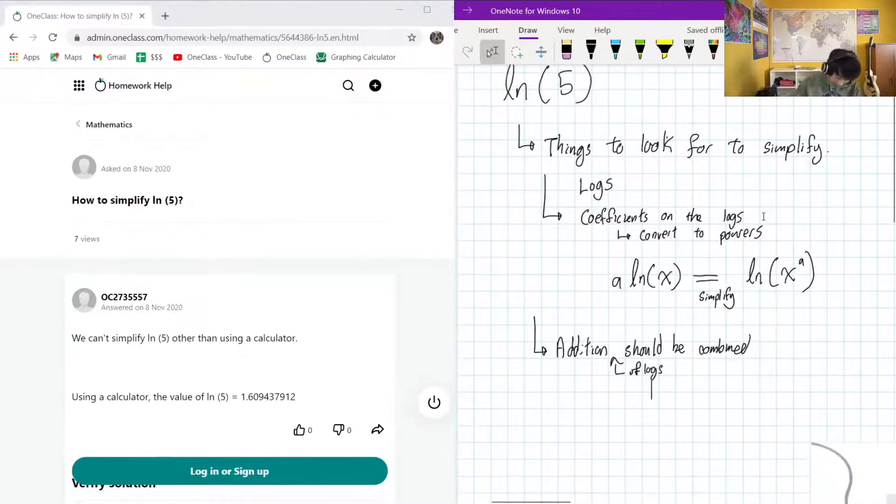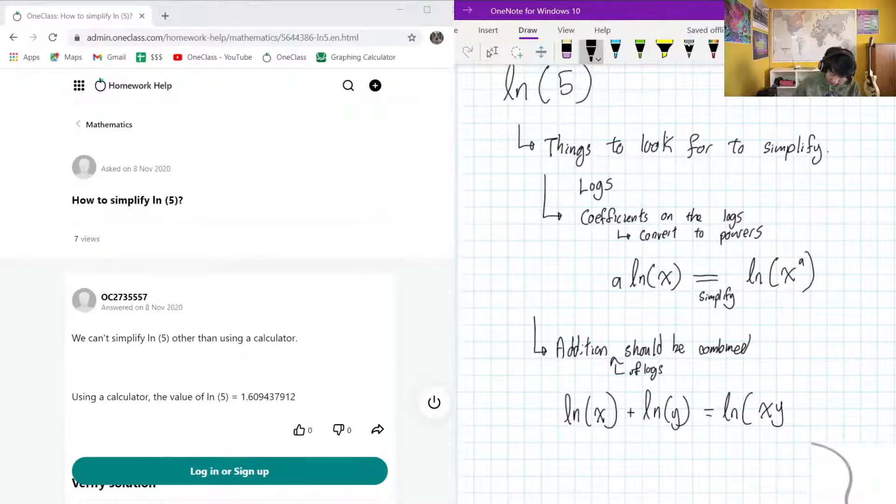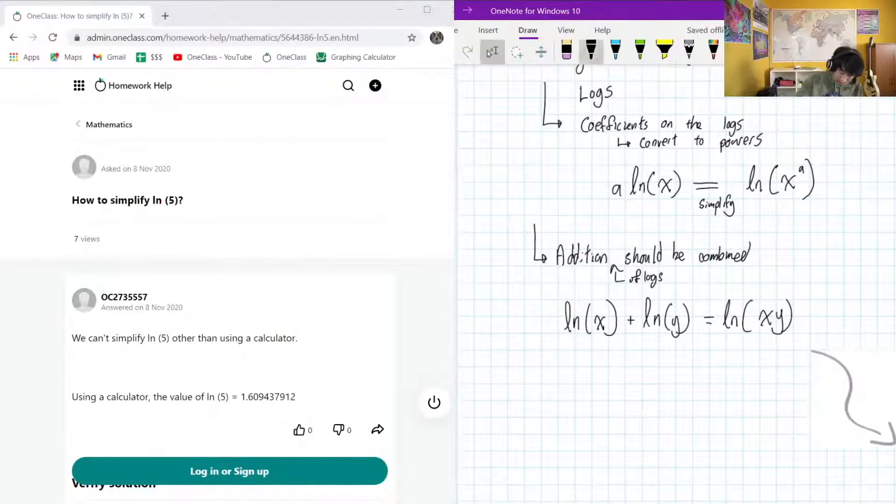So suppose that we have something like ln(x) plus ln(y). We want to rewrite this as ln of x times y. Now same thing can be said with division, but division is going to be associated with subtraction.